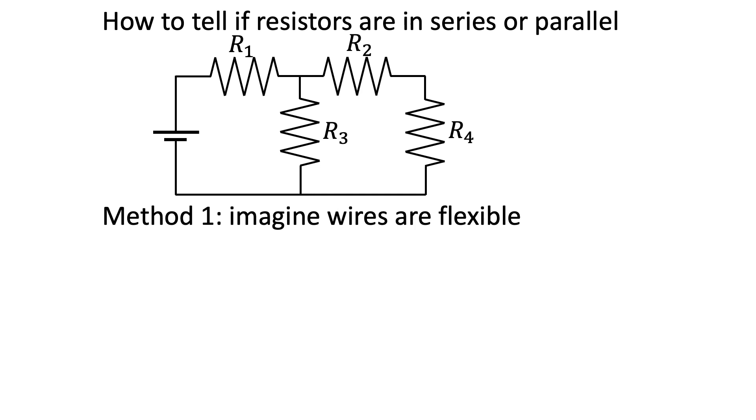In method 1, we imagine that the wires are flexible so that we can rearrange the circuits as long as we don't break any connections. Then, we imagine rearranging the circuit until all the resistors are either horizontal or vertical.